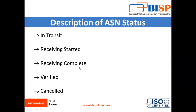The next status is Receiving Complete — the Advanced Shipment Notice has been fully received, meaning the last case or unit has been received. Next is Verified — in this state the ASN has been received, closed, and moved out to the receiving process. Finally, the last status is Cancelled, where the Advanced Shipment Notice is cancelled.